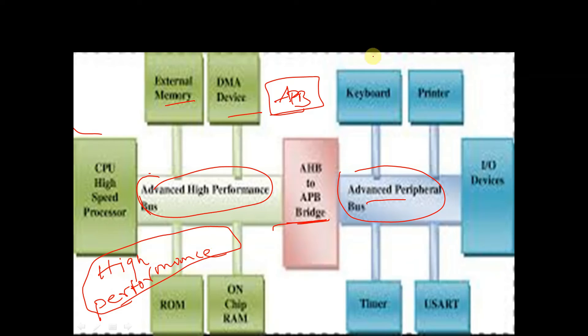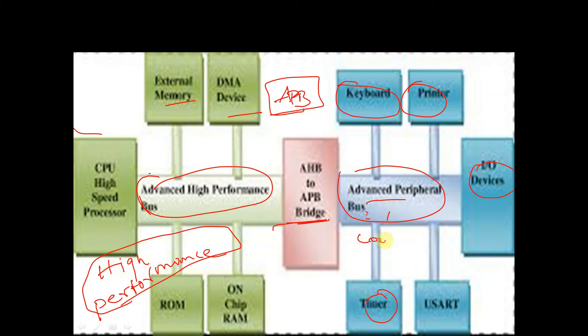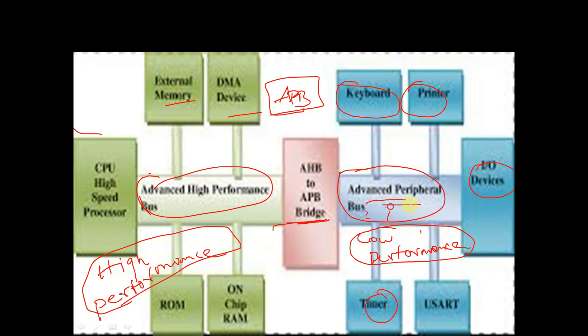On the right side we can see the peripherals like keyboard, printer, input-output devices, or timer. These are very low performance devices, and these types of peripherals are connected using the APB interface.